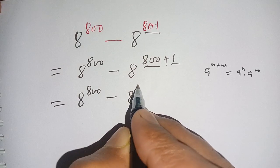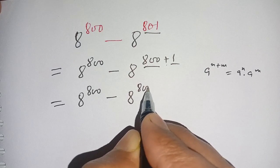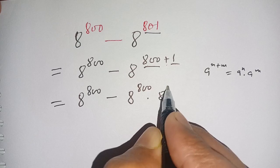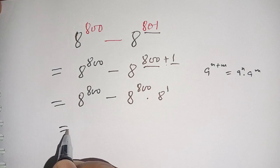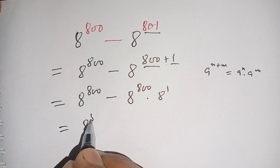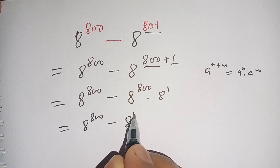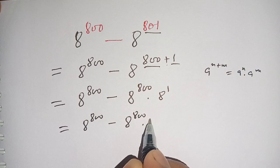We apply this. We get 8 power 800 times 8 power 1. On the next step we get 8 power 800 minus 8 power 800 times 8.